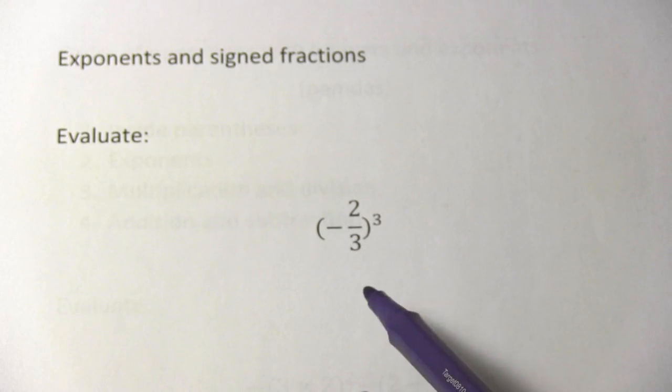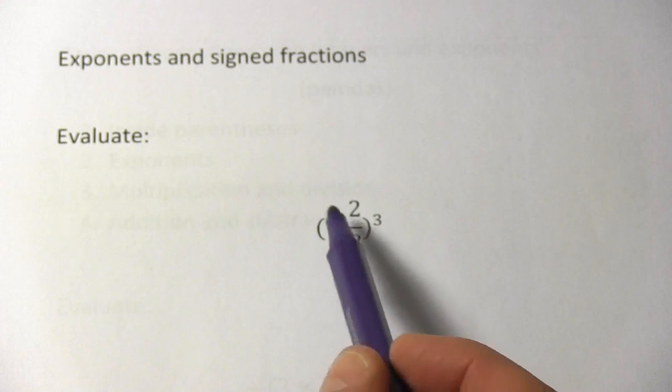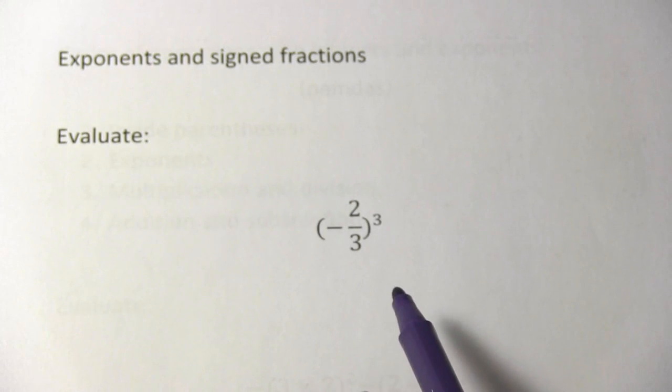In these problems, we're raising fractions, some of them with negative signs, to powers. So let's take a look at how that's done. Here we have negative two-thirds, the whole quantity, raised to the third power.